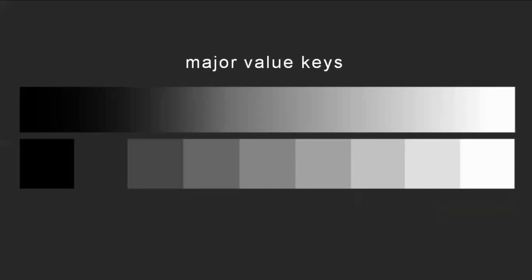Back to our value scale — what I want to talk about are major value keys. In the same way that on a piano you have keys, you might be in the key of C or in the key of G, there are keys to images — value keys. Within this full spectrum from blackest black to whitest white and all the grays in between, if we use most of the expanse of that spectrum, we might say we're working within a major value key. Major chords on a piano or guitar are bright and happier. So if you use mostly dark tones but still use some lighter tones and maybe even a pure white, but most of the composition is made up of dark, low-end tones, then you might say that you're using a low major value key.